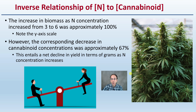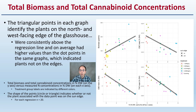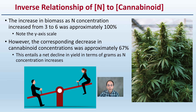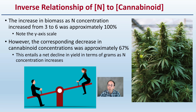It's an inverse relationship. The increase in biomass as nitrogen concentration increased from 3 to 6 was approximately 100% — essentially doubling in size. However, the corresponding decrease in cannabinoid concentration was approximately 67%. This entails a net decline in yields in terms of grams as nitrogen concentration increases. So as you get excessive with nitrogen, your cannabinoid concentration is decreasing. As nitrogen goes up, the cannabinoid concentration goes down — which growers don't want.